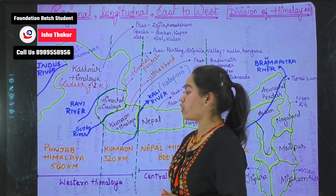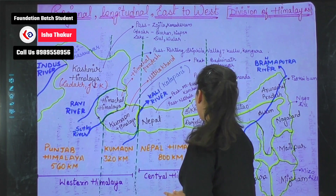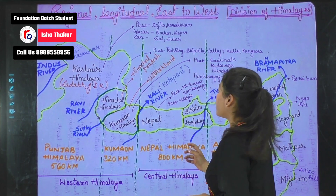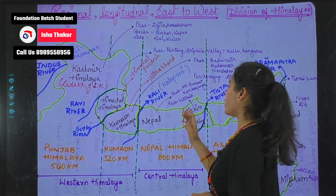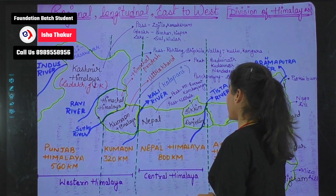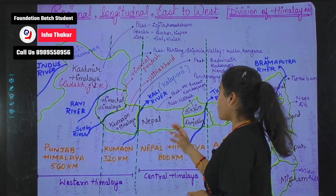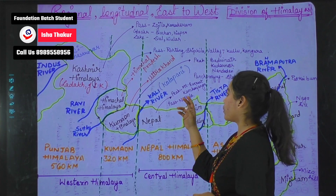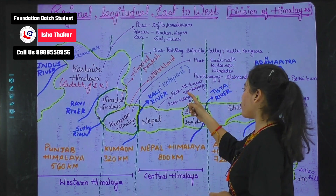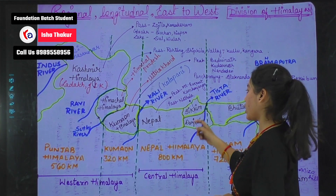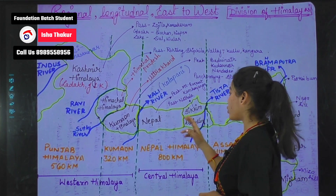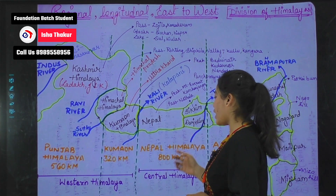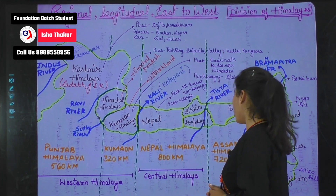Moving on to Nepal Himalaya. Nepal Himalaya is situated between the Kali River and the Tista River. In Nepal, the peaks are Mount Everest and Kanchenjunga. Sikkim has Nathu La Pass and Darjeeling also.